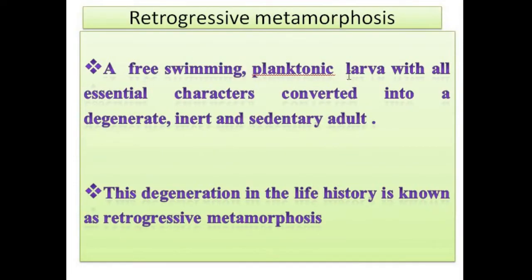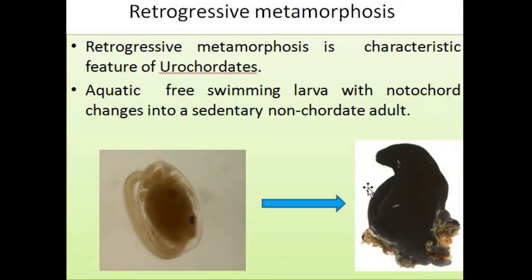We have a free-swimming planktonic larva with all chordate characters, which converts into a degenerate sessile and sedentary adult. This degeneration during metamorphosis is the retrogressive metamorphosis. Metamorphosis means the radical changes that appear in the life history of an organism. In retrogressive metamorphosis, all chordate characters which help in the successful life of an organism degenerate when it becomes an adult. This is known as retrogressive metamorphosis, and it is a characteristic feature of the Urochordates. The aquatic tadpole larva with a notochord changes into a sedentary non-chordate adult.